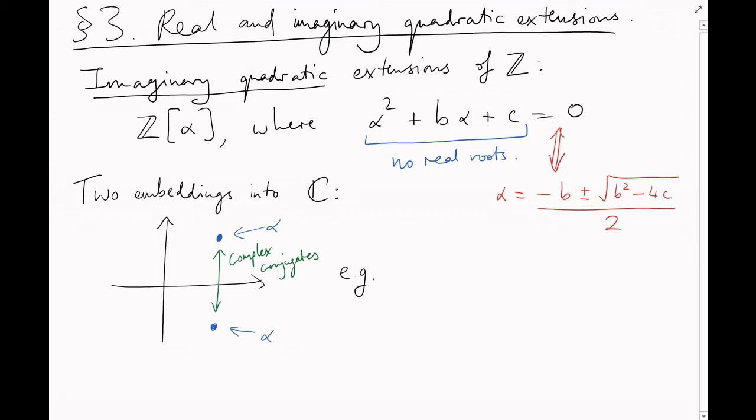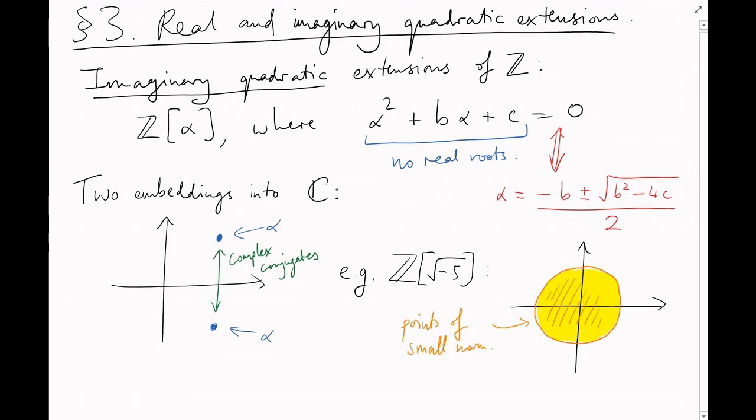So, last video we embedded Z adjoin root minus 5 into the complex plane with x and y axes. That meant that the points of norm less than some fixed value all lay in a disk, x squared plus y squared is less than or equal to r squared. And we could calculate its area. This was the convex bubble we used in Minkowski's theorem.